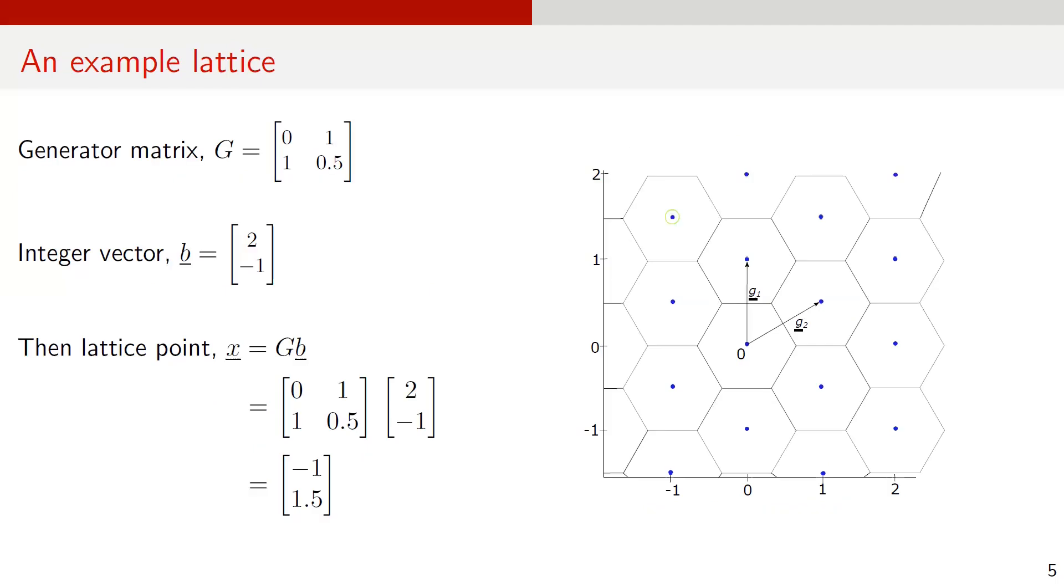Now, let's see how to encode an integer vector to get a lattice point. Here, the generator matrix G has basis vectors G sub 1, 0 and 1, and G sub 2, 1, 0.5. These basis vectors G sub 1 and G sub 2 are shown in the figure. Assume that we have an integer vector B of 2 minus 1. To encode the integer vector B, we compute G times B. This gives a lattice point X of minus 1, 1.5 which is shown with a green circle in the figure. This is how we compute a lattice point for a particular integer vector.